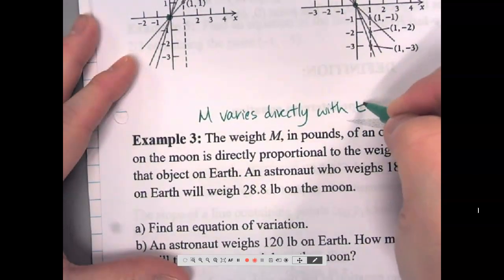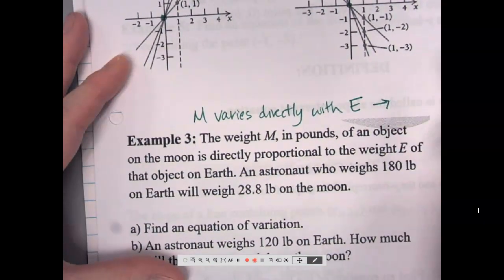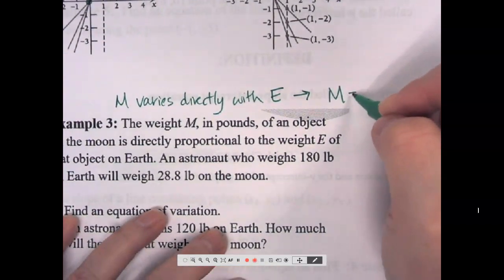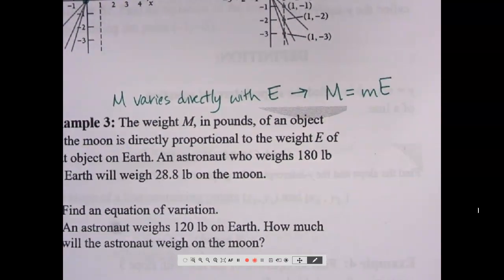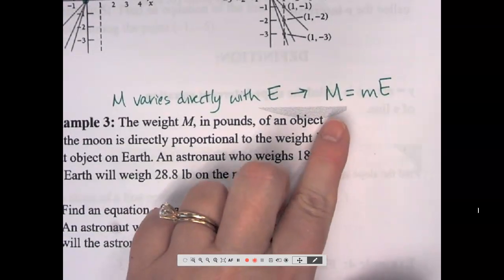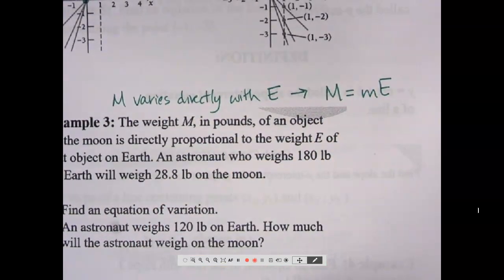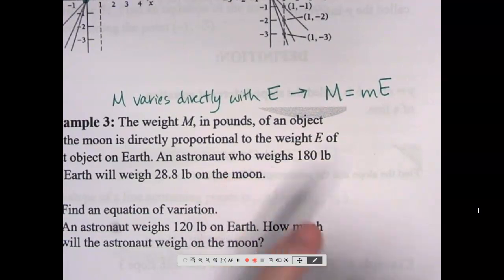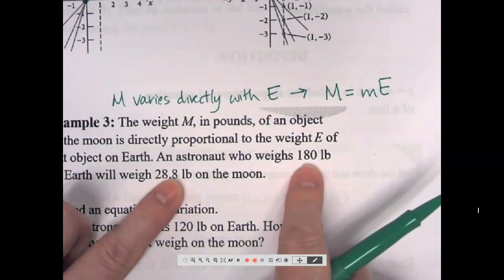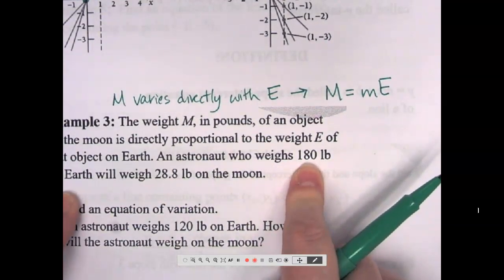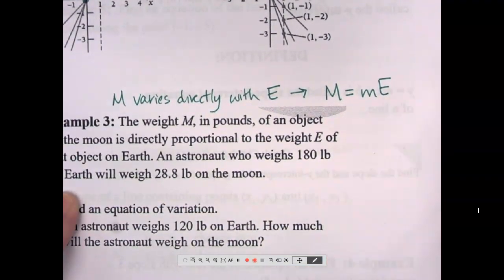Our equation is M equals slope times e — I'll make that a capital M just like in the problem. So weight varies directly with e gives us M equals slope times e. Now I'll use the given information to find the slope. An astronaut weighs 180 pounds on earth, and 28.8 pounds on the moon.